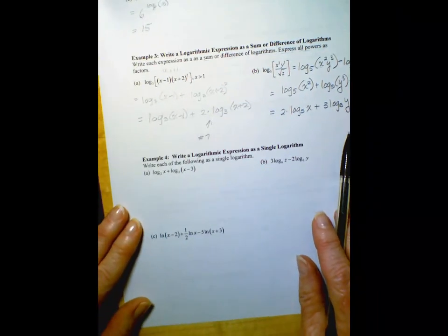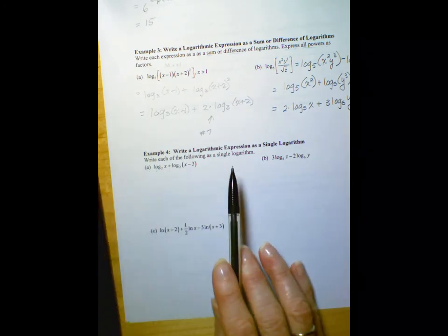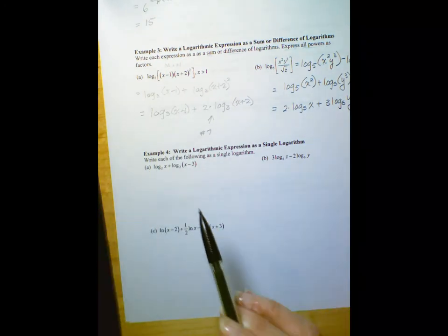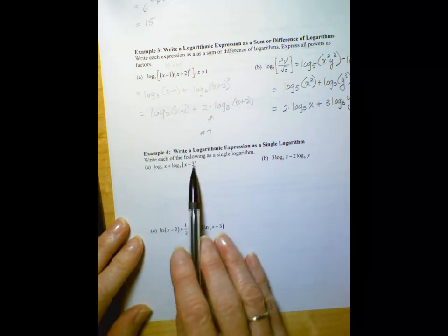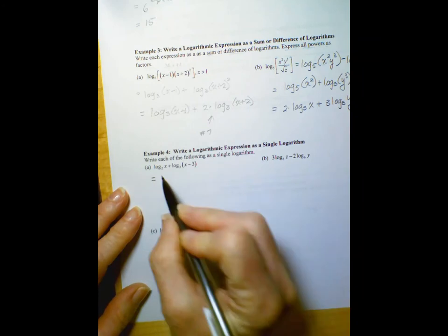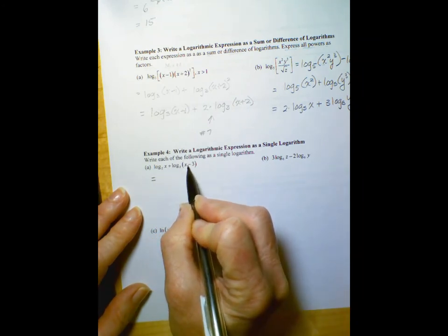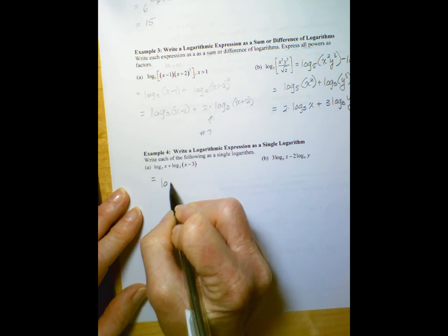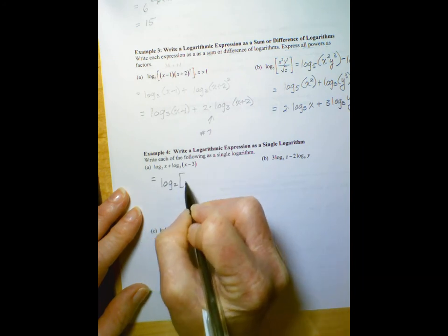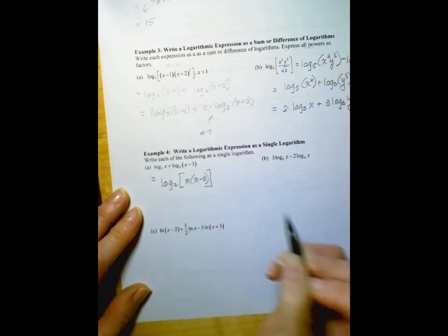So in example 4, this is what we're primarily going to be doing. Taking an equation, this isn't an equation, it's an expression, but we will eventually have equations with two logs in it and write it as a single log. We'll need to do that to solve it. So we have log base 2 of x plus log base 2 of x minus 3. So that would be log base 2 of x times x minus 3, m times n.